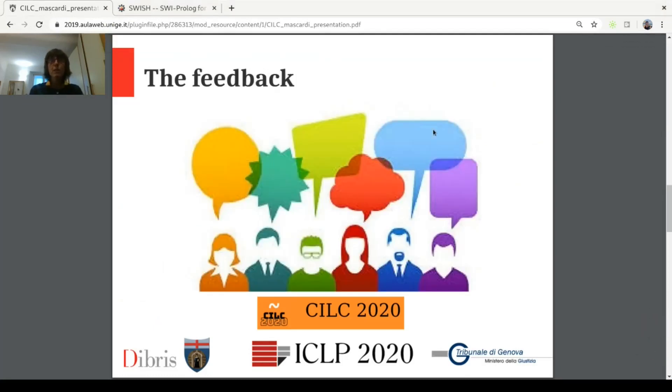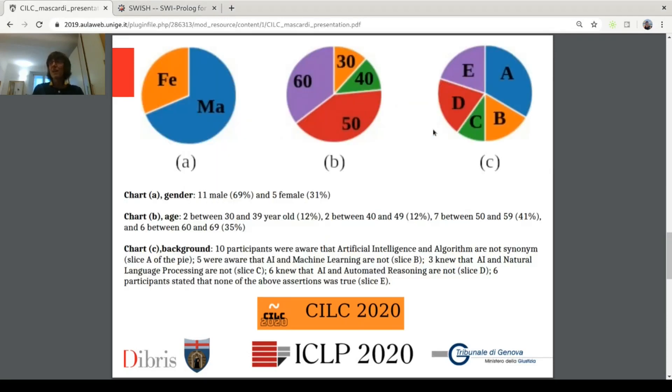You are logic programming guys. So, you see that our logical judge is a very simple one. But, well, it was shown to 70 magistrates whose computer science literacy is really low. So, I want to show you the chart C, where we asked to all the magistrates, but we collected only 17 answers. We asked them if they were aware that artificial intelligence is not the same as algorithm or machine learning or natural language processing or automated reasoning. And 6 magistrates out of 17 said that they were not aware of these differences.